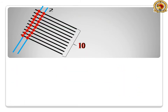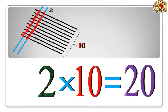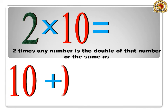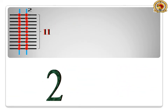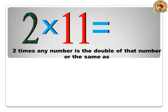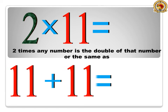2 times 10 is equal to 20. 2 times any number is the double of that number, or the same as 10 plus 10 is equal to 20. 2 times 11 is equal to 22. 2 times any number is the double of that number, or the same as 11 plus 11 is equal to 22.